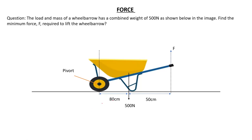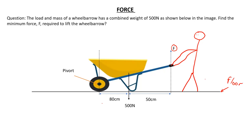We have a force upwards — this will be the force used by the individual. This will be the ground, and this force is required to lift the wheelbarrow. The 500 N is the combined weight of the load inside — let's assume there are rocks inside the wheelbarrow — as well as the weight of the wheelbarrow itself. Combining both gives 500 N, and the pivot in this case will be the center of the wheel.